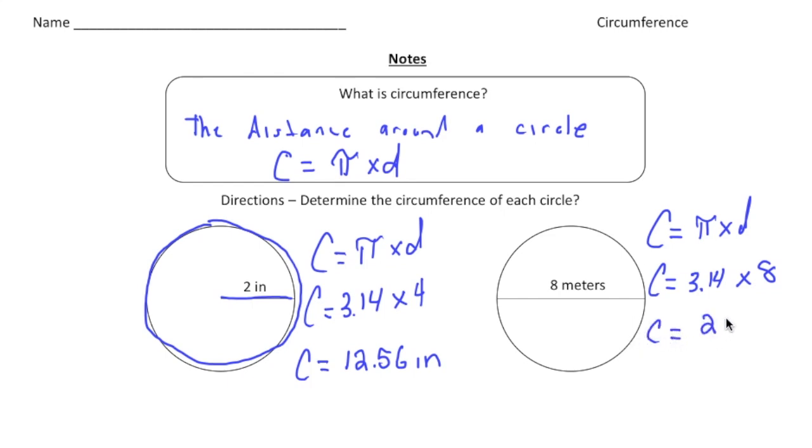And when we multiply 3.14 times 8, we get an answer of 25 and 12 one hundredths. And again, it's a distance. So it's going to be meters. That's going to be the label. So the big thing to remember about this, to find the circumference, is just the pi times the diameter.